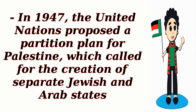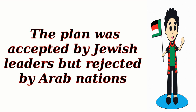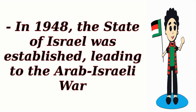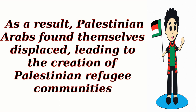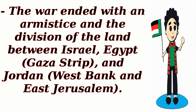In 1947, the United Nations proposed a partition plan for Palestine, calling for the creation of separate Jewish and Arab states. The plan was accepted by Jewish leaders but rejected by Arab nations. In 1948, the State of Israel was established, leading to the Arab-Israeli War. As a result, Palestinian Arabs found themselves displaced, leading to the creation of Palestinian refugee communities. The war ended with an armistice and the division of the land between Israel, Egypt (Gaza Strip), and Jordan (West Bank and East Jerusalem).